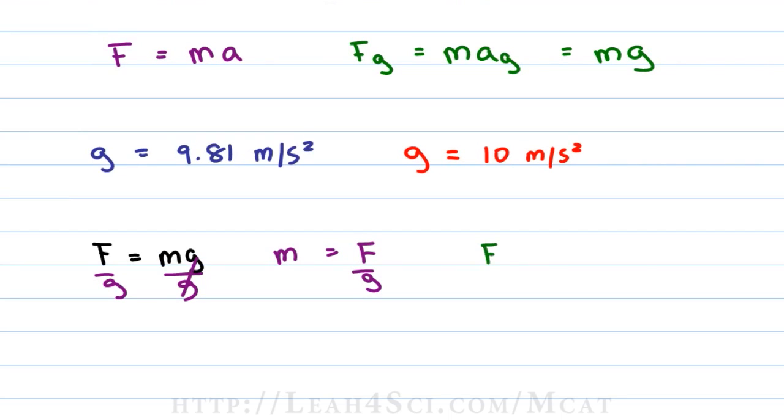Once again, if f is mass times gravity and this time you're asked to solve for gravity and let's say you're given a force and you're told that gravity differs from the 10 meters per second squared, just divide both sides by m and your new gravitational constant is equal to f over m.